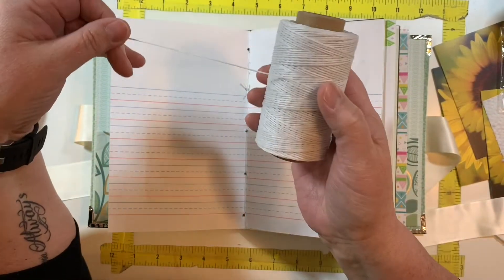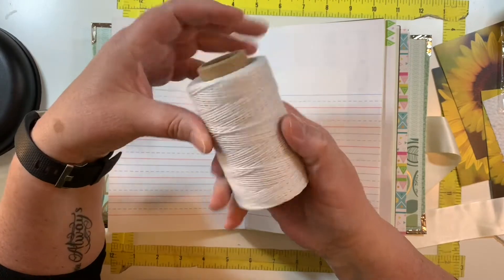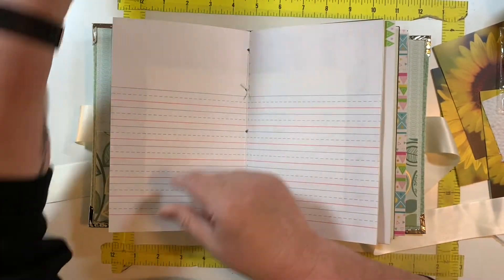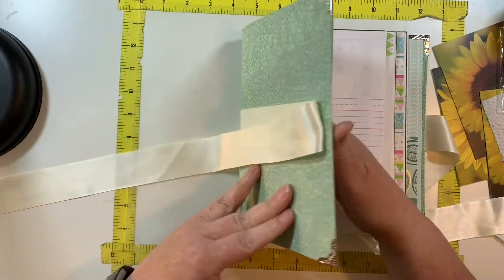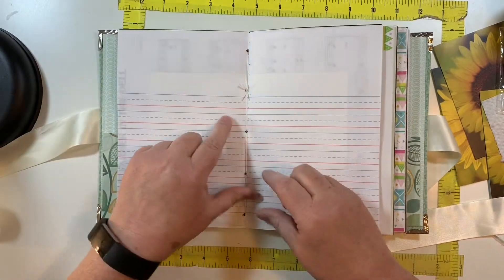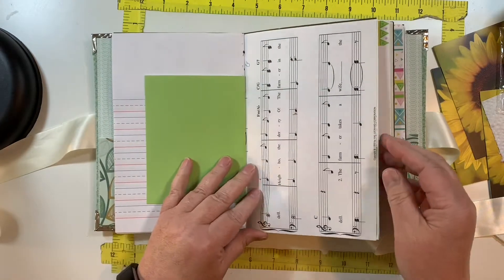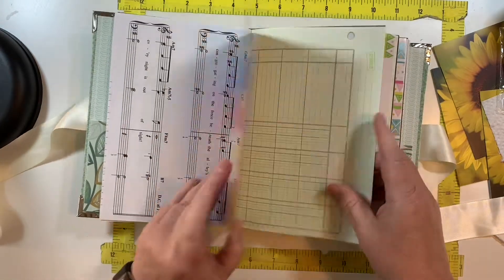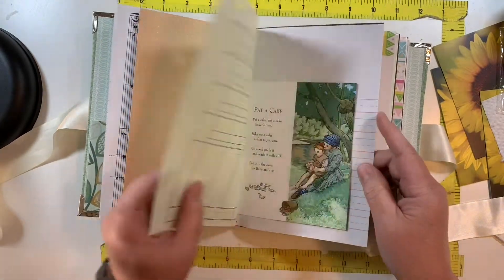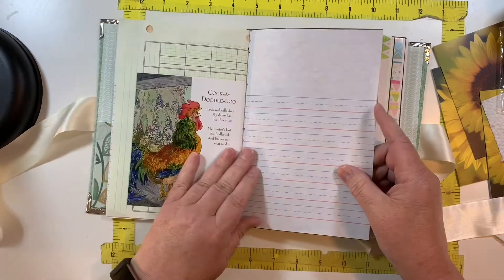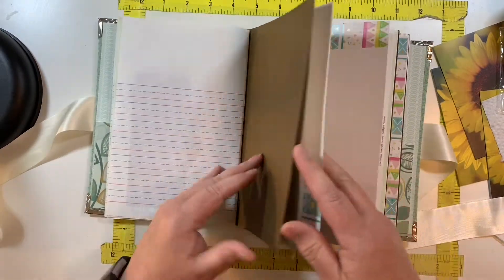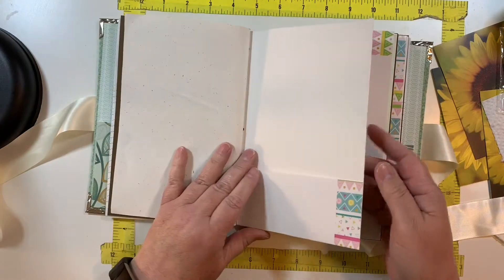I recently bought this from Amazon. It's waxed thread. They use this in leather making, just to see how I like it. So far I like it. It seems to be doing a really secure hold. Anyway, so in here we have the back of the signature. More rhymes and there.